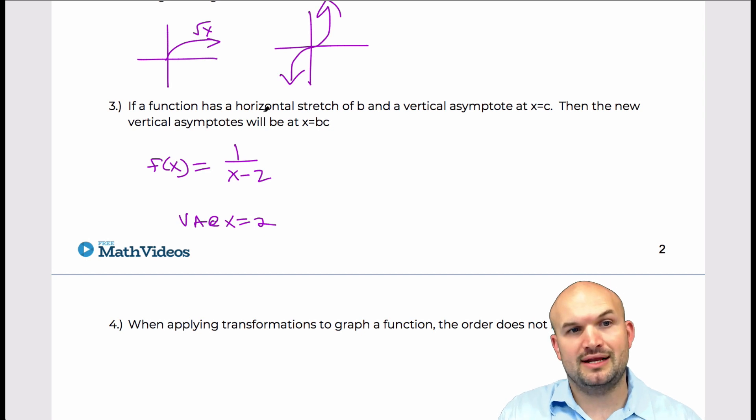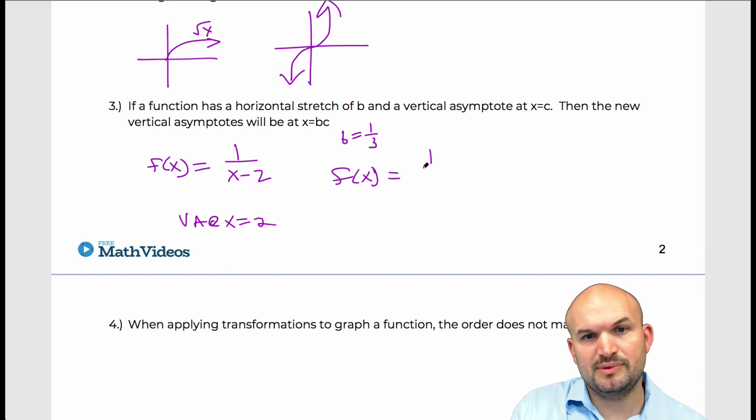Now let's go ahead and apply a horizontal stretch of b. So remember, if it's a horizontal stretch of b, that's going to be basically the same as multiplying by a fraction. So let's say, let's have b equals one third. So therefore, my new function with a horizontal stretch would be one over one third times x minus 2.